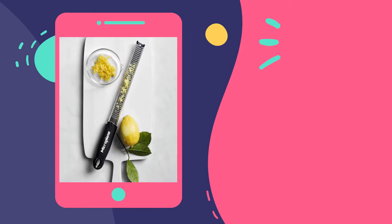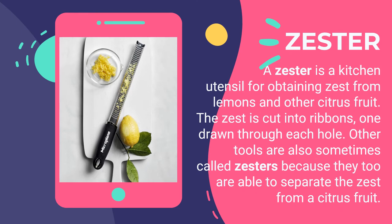Another tool is the zester — a kitchen utensil for obtaining zest from lemons and other citrus fruits. The zest is cut into ribbons, one drawn through each hole. If you don't have a zester, a cheese grater might seem like an option, but the grates are often too deep or too shallow to efficiently get the zest. The ultra-fine zest is packed with lemon flavor and can be used in any recipe calling for lemon zest.